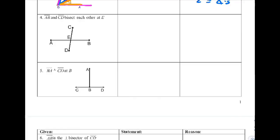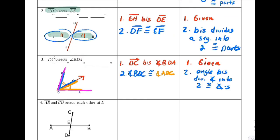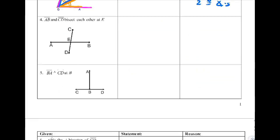Okay, number four. There's a keyword that's different in number four than it was in number two. This one says that AB and CD bisect each other. So it's not just that this one bisects. This one does too.